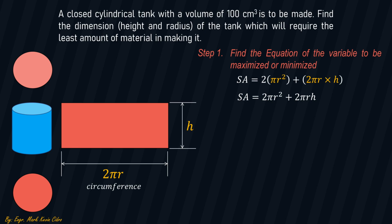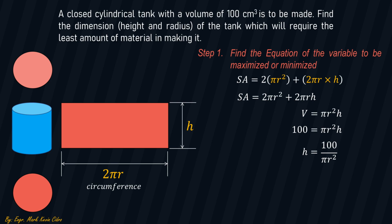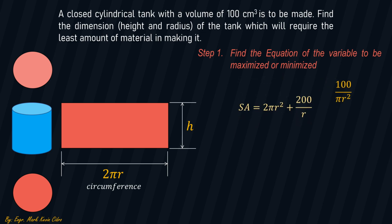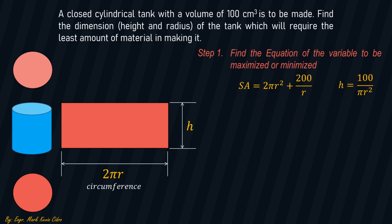To relate R and H, we use the given volume of 100 cubic centimeters. The volume of a cylinder is V = πr²H. Substituting V = 100, we get H = 100/(πr²). Substituting this into the surface area equation and simplifying, we have SA = 2πr² + 200/r. This is the equation we are looking for in step number one. We also note the value of H in terms of R for later use.